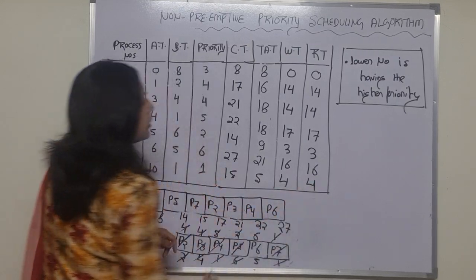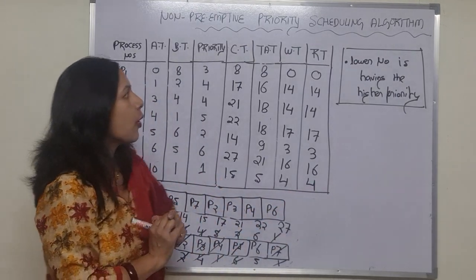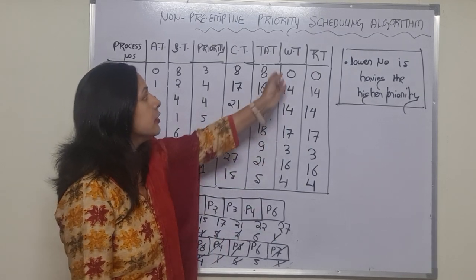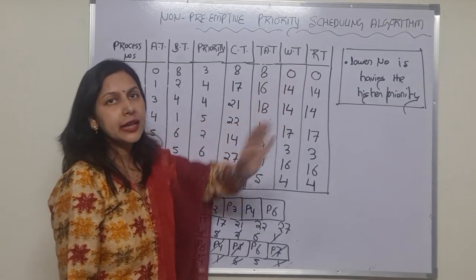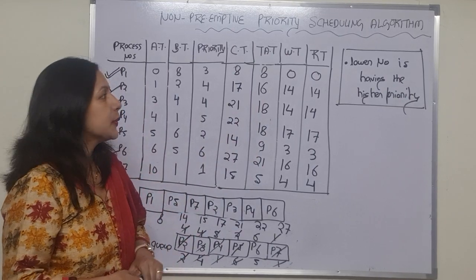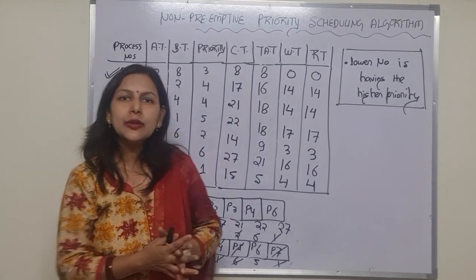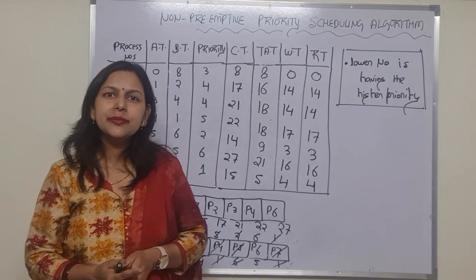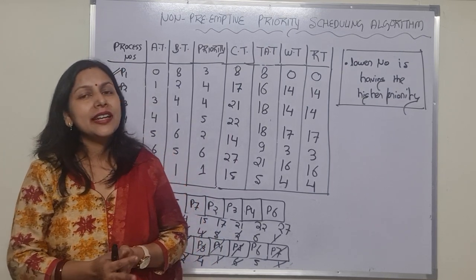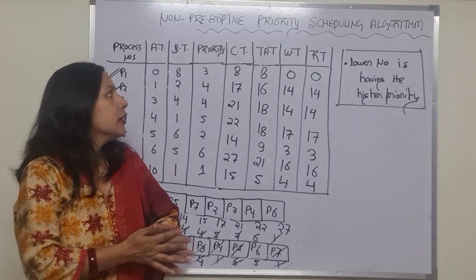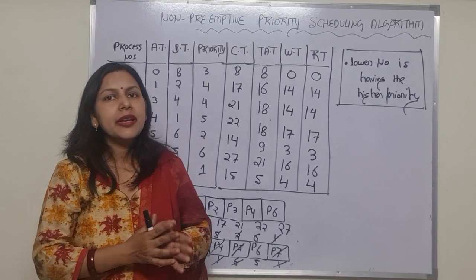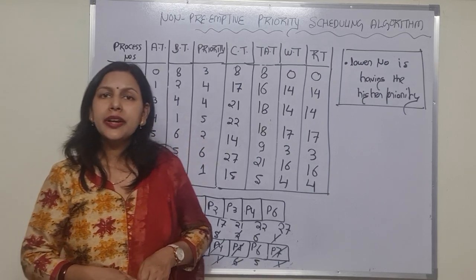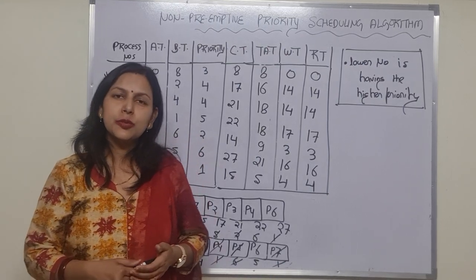In this algorithm and this question, the waiting time and the response time are similar. Hope you have understood how to calculate the non-preemptive version of priority scheduling algorithm. Try other numericals as well based on the tips I have told you. Thank you so much.